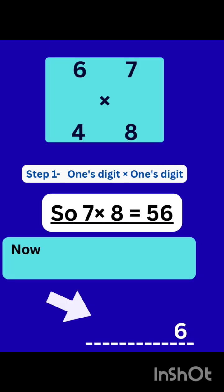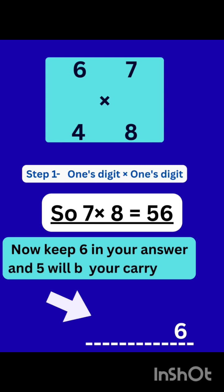Now keep 1's digit of 56, that is 6, in your answer right most digit. And 5 will be our carry over.